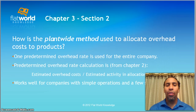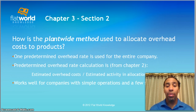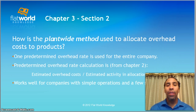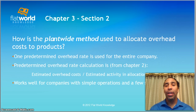How is the plant-wide method used to allocate overhead costs to products? One predetermined overhead rate is used for the entire company. The predetermined overhead rate calculation from chapter 2 is: estimated overhead cost divided by estimated activity and allocation base. The allocation base is either hours worked, money spent on direct labor, or machine hours. This works well for companies with simple operations and a few similar products — if all your products are pretty similar, you don't need a lot of variance in overhead. But if you have a lot of different departments and different products, you may need a different approach.